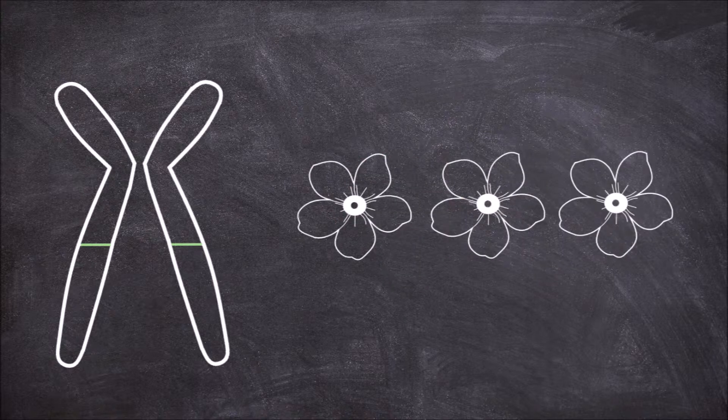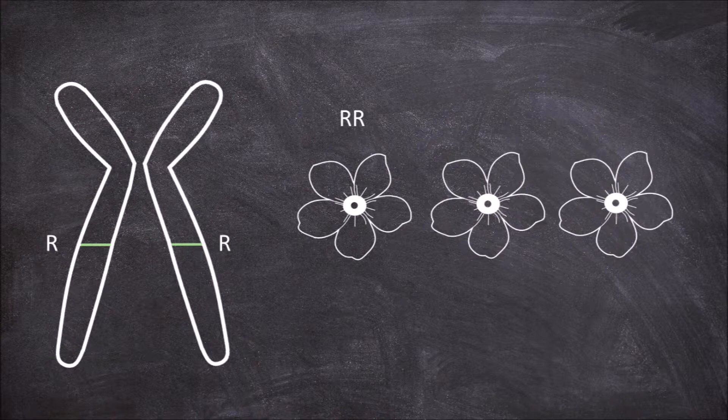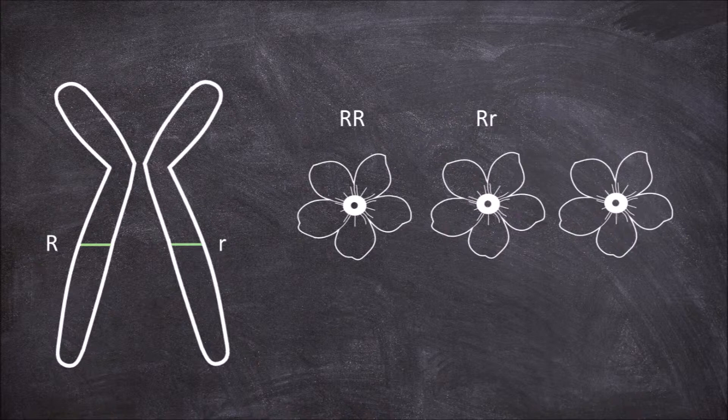An individual may have two dominant big R alleles, giving the genotype big R big R. They can have one dominant big R and one recessive little r, giving the genotype big R little r. They can also have two recessive little r alleles, giving the genotype little r little r.